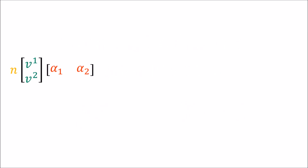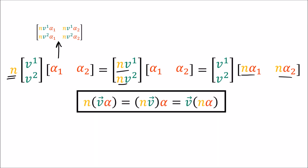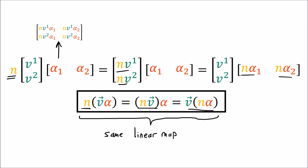All of this tensor product stuff started off with the suggestion of doing array multiplication with a column on the left and a row on the right. Now consider what happens if we scale this by some number n. That's the same thing as scaling the column by n or scaling the row by n — in both cases we get the same result. Likewise, when we have the tensor product between a vector and a covector scaled by n, we can either scale the vector or the covector by n and get the same result.